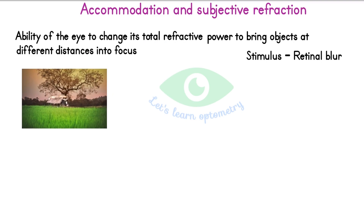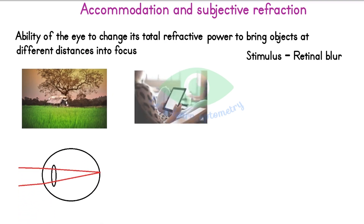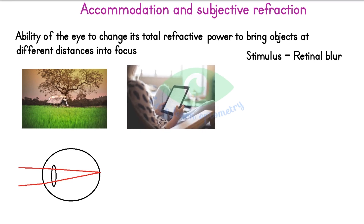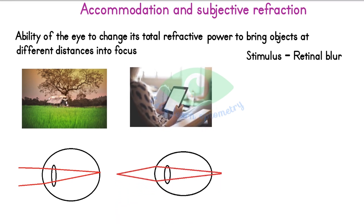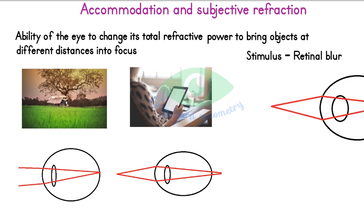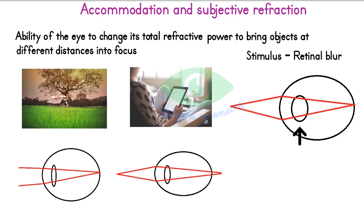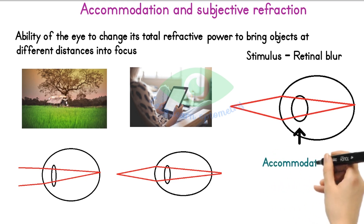If you see a distant object, the accommodation will be relaxed. But while seeing a near object, if the lens continues to be in a relaxed state, the image will not focus on the retina and we cannot see clearly. The two main refractive components of the eye are the cornea and the lens. The power of the cornea is constant, so the lens changes its curvature to increase the power of the eye, thereby focusing the image on the retina.